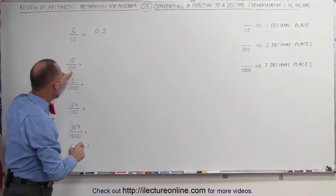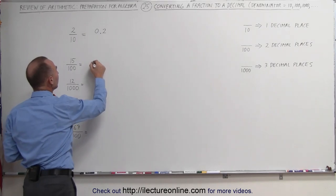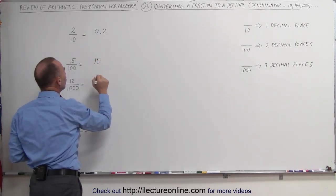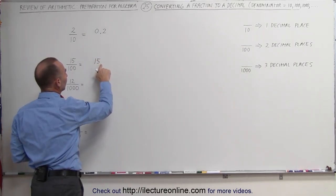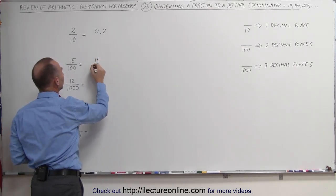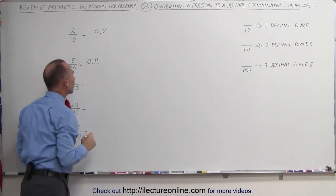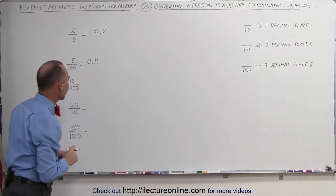If it's divided by 100, we write the number, but now we're going to need two decimal places. Starting from the right, we count one, two, put the decimal place down, and then put a zero in front.